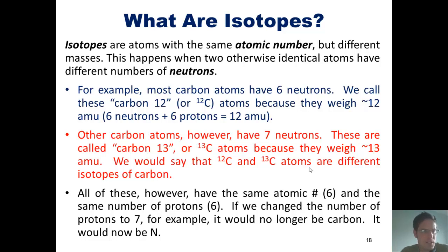If we change the number of protons in a carbon atom to 7, for example, it would no longer be carbon. It would now be a nitrogen atom. I hope that makes sense. Let's take a look at some problems.